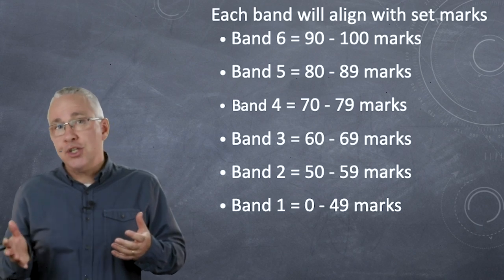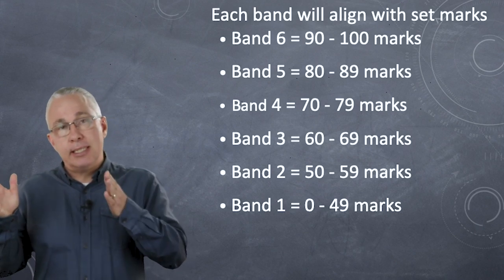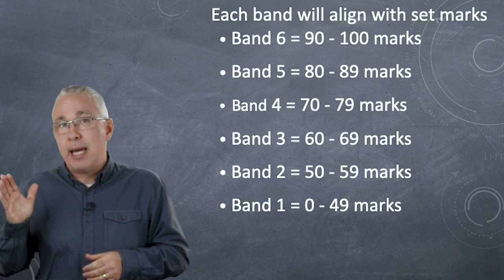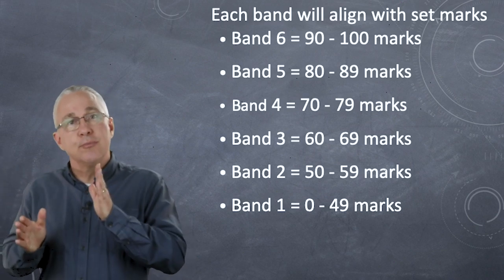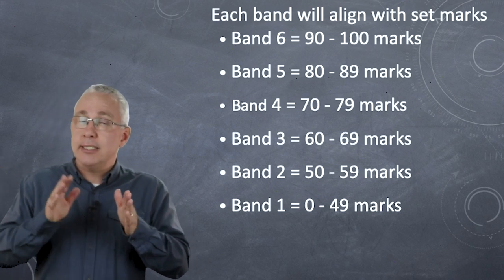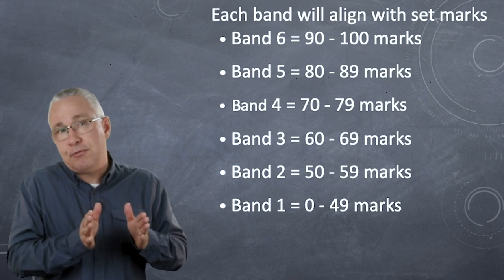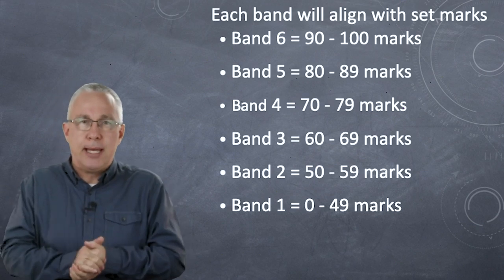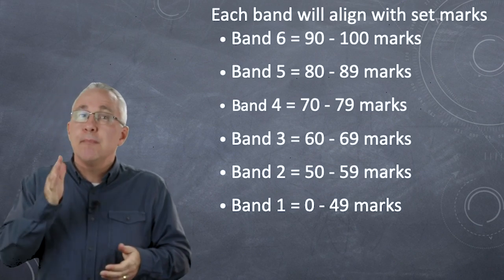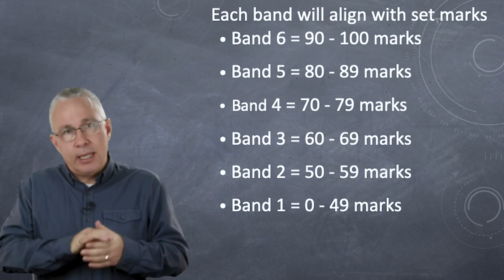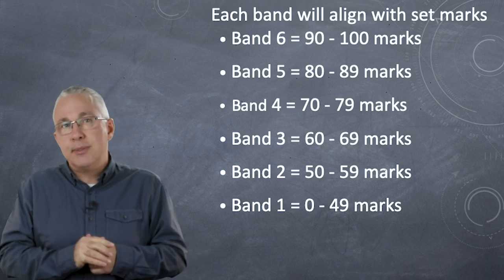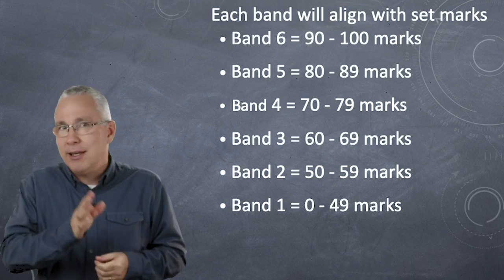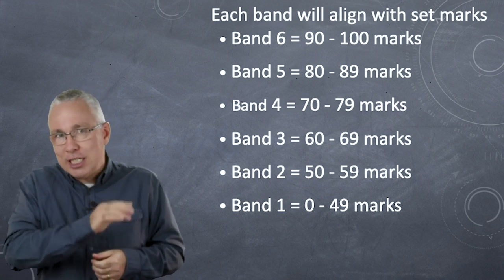The mark associated with each band is basically 10 marks per category. Band 6 is from 90 to 100, band 5 from 80 to 90, all the way down to 50. If you get a 50 to 60 range you get a band 2. Below 50 is a band 1 — the minimum standard — but if you're watching this video, that's not going to be you.